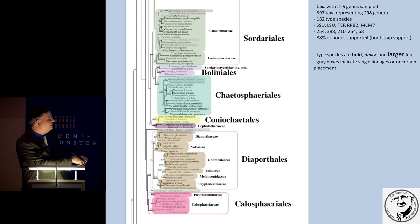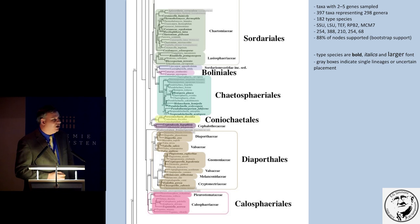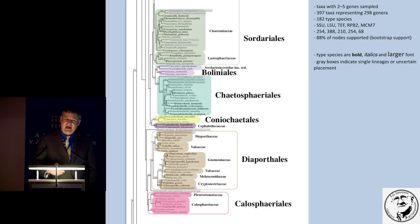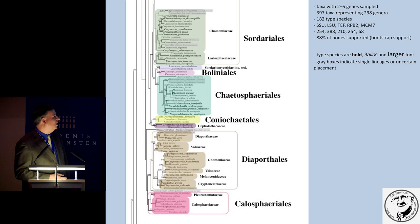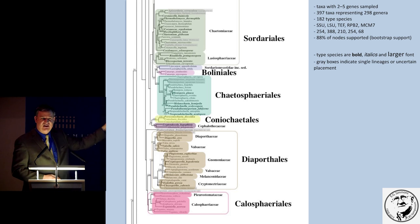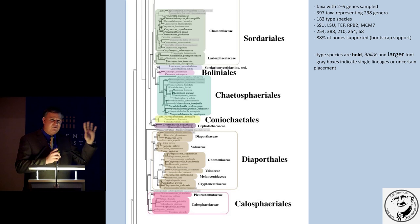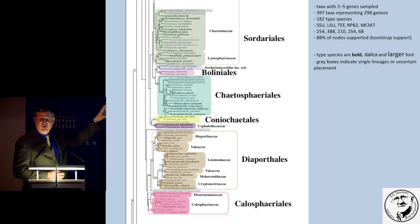Finally, our outgroups in Leotiomycetes and Dothideomycetes appear at the base. Any Sordariomycetologist would like to see Xylariales at the base of the tree, and that is where it should be — but before I did all this coloring, I forgot to swap the branches. So that is just a branch-swapping issue. Think of it as Australia being at the top of the world.